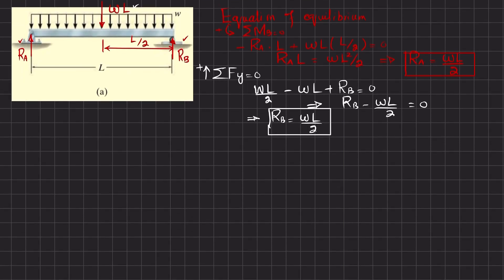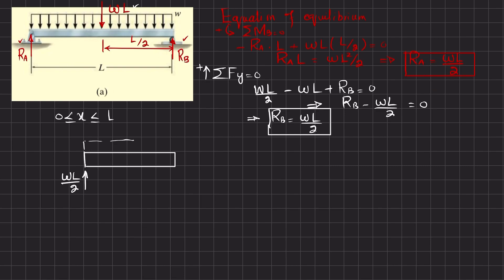Now that we have both reaction forces Ra and Rb, we will section the beam at any point and draw the free body diagram. For x between 0 and l: after cutting, we have Ra equal to wl/2 and a distributed load of magnitude w. The distributed load converted over distance x gives w·x, acting at x/2. At the cut there will be a shear force V and a bending moment M.